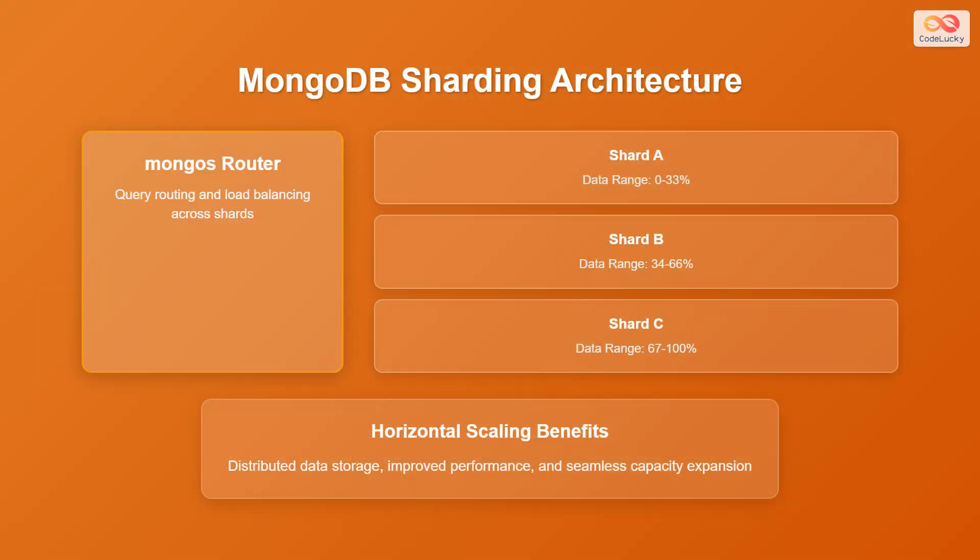Next up is Sharding architecture. Sharding is MongoDB's solution for horizontal scalability. The Mongos router directs queries and balances the load across shards. Each shard stores a subset of the data. For example, shard A might contain data from 0 to 33%, shard B from 34 to 66%, and shard C from 67 to 100%. This strategy allows for distributed data storage, improves performance, and provides seamless capacity expansion, making it ideal for managing large data sets.